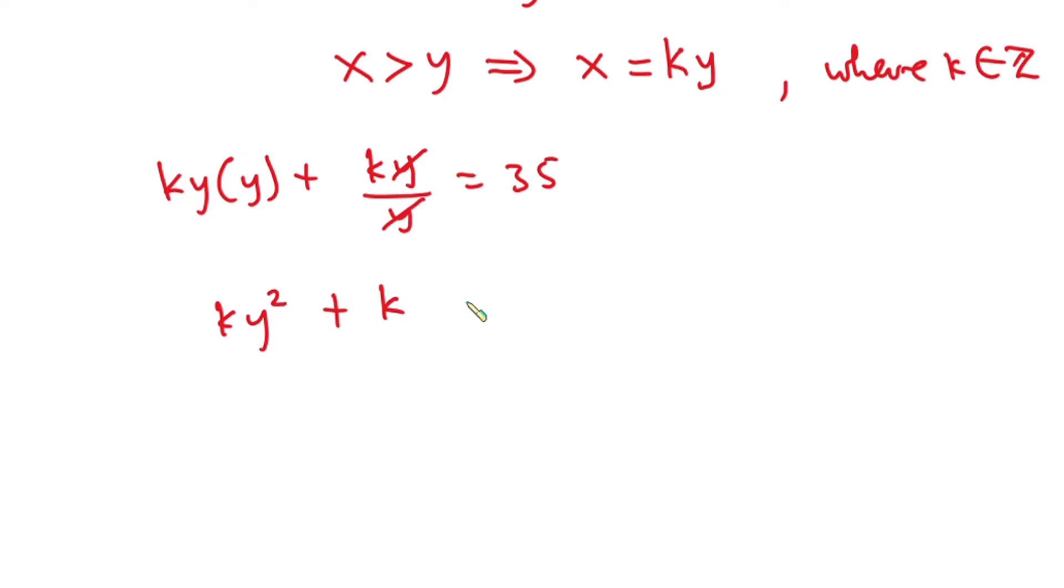ky times y is ky to the second power, then plus this k will cancel, so we have k here, and this equals 35. Now let's factor k out: we have k times (y² + 1) equals 35.